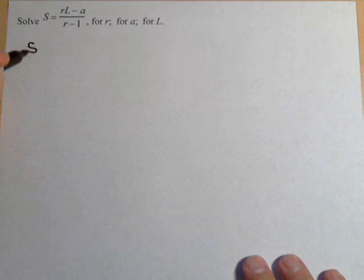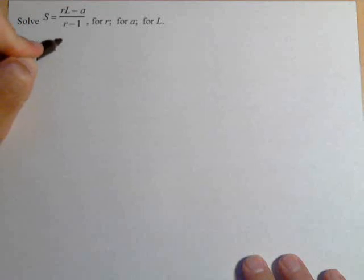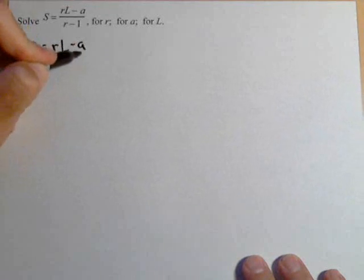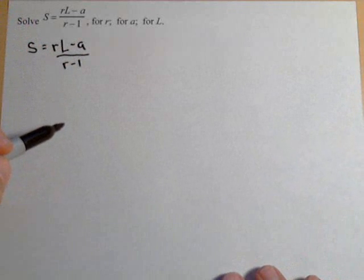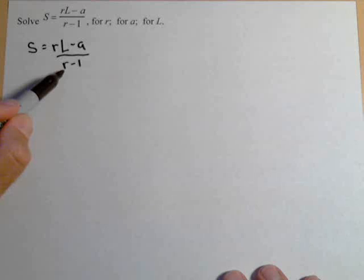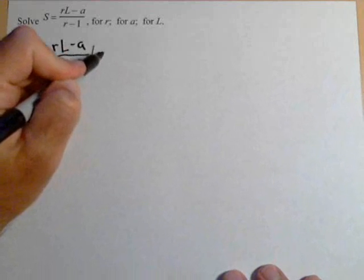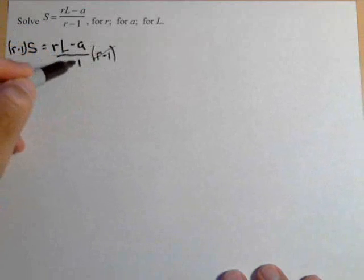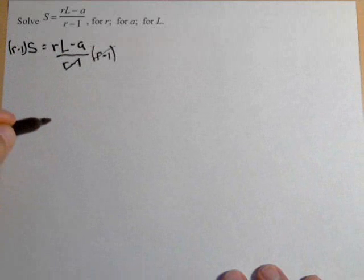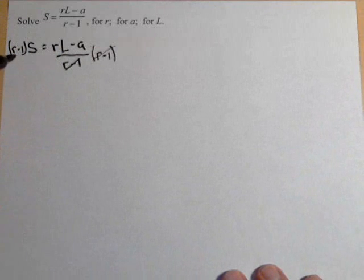We start with S equals RL minus A over R minus one. The first thing we're gonna want to do is get that R out of the denominator. We can do that by multiplying both sides by R minus one. Those will cancel, we no longer have a fraction and R is out of the denominator.